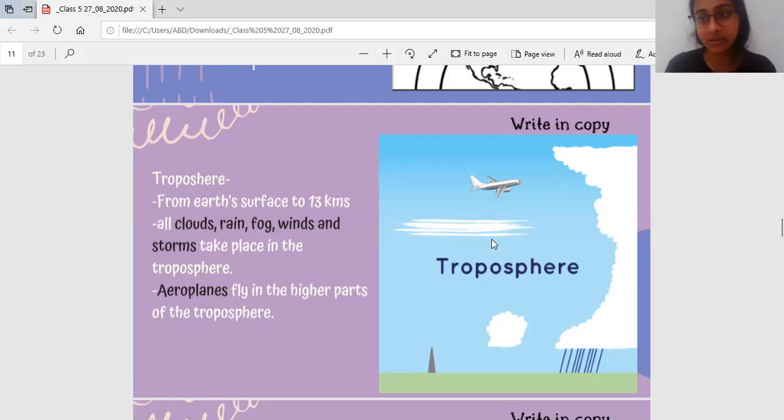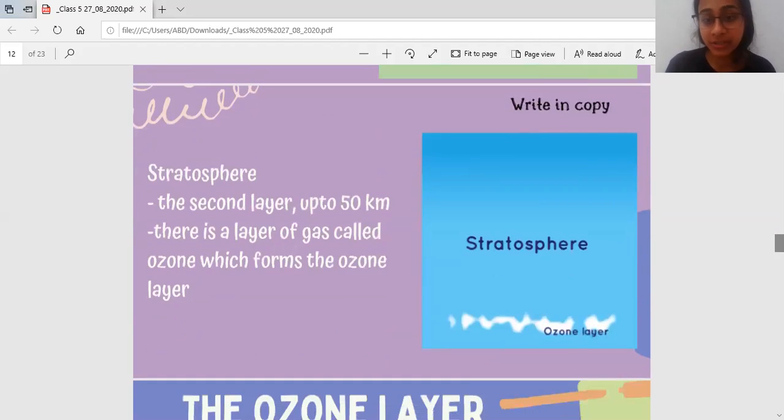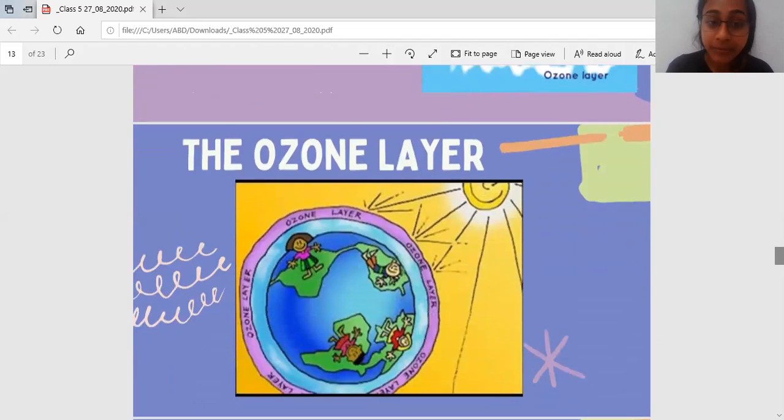If somebody asks you, which layer is in the clouds? It is Troposphere. Then, we move on to Stratosphere. Now, this is a really, really important layer. This is our second layer. And it goes on from the ground till 50 km. Now, this layer has a special gas. There is a gas called ozone. And that ozone forms the ozone layer. We will study more about the ozone layer. So, ozone layer is in the stratosphere. And it covers our entire Earth.